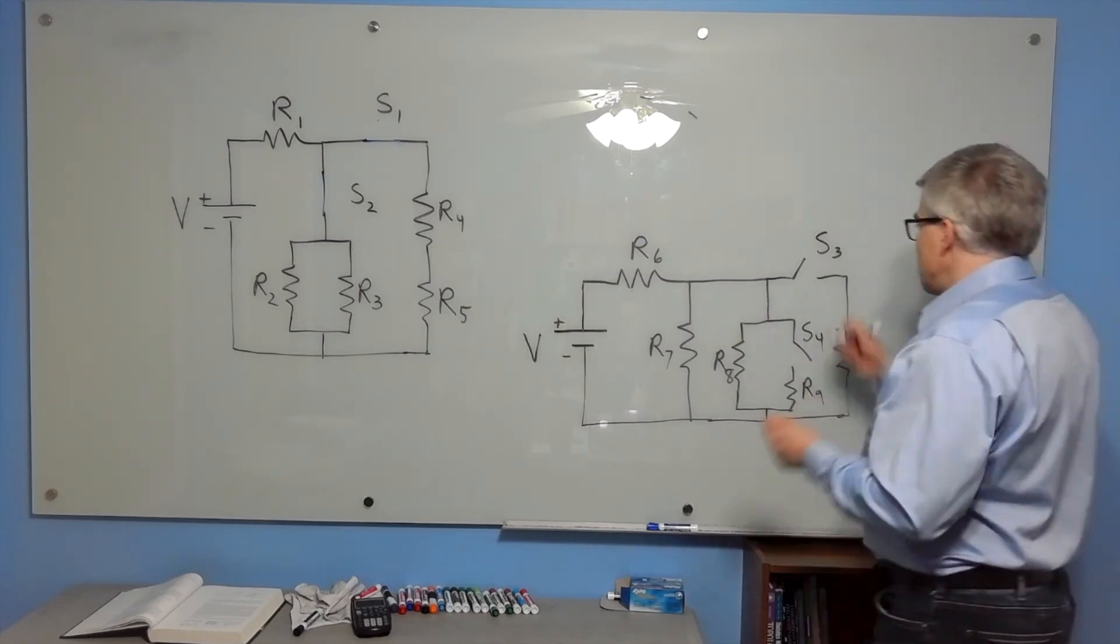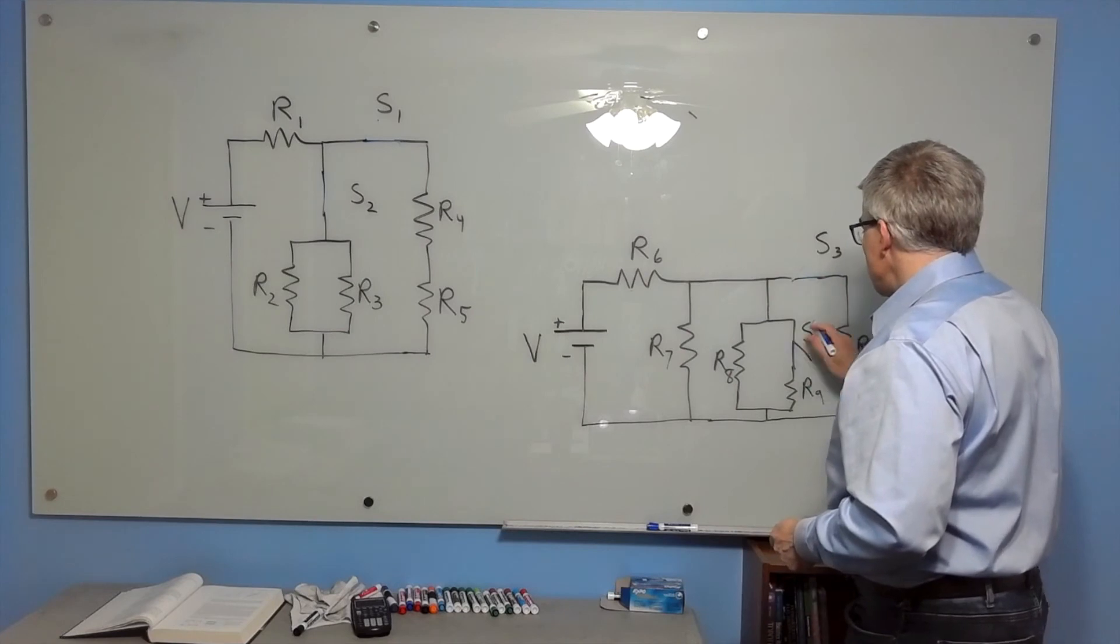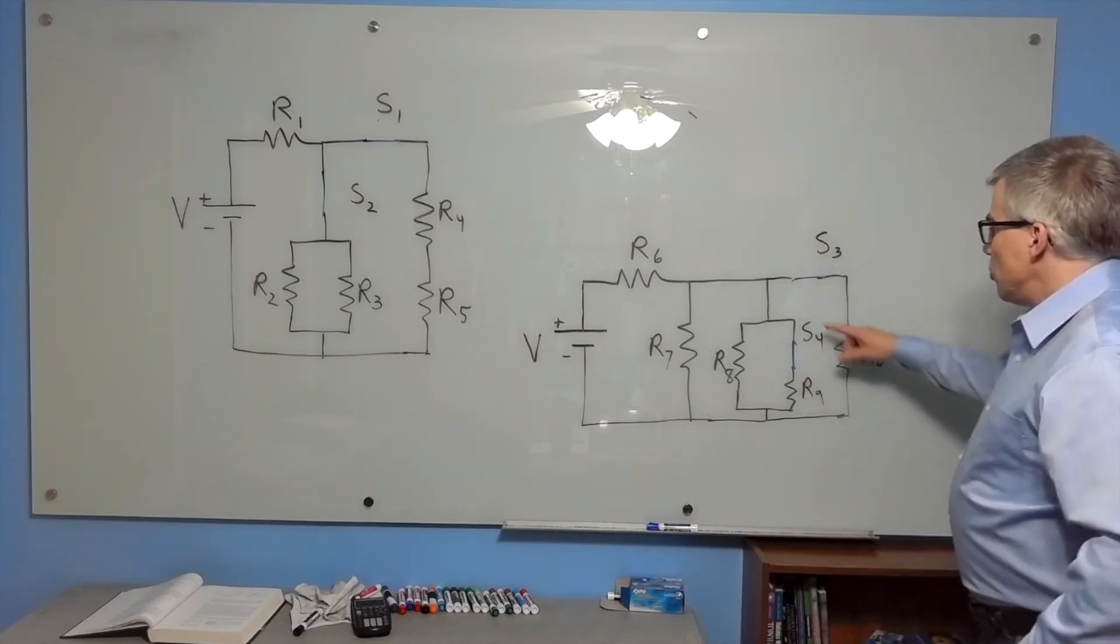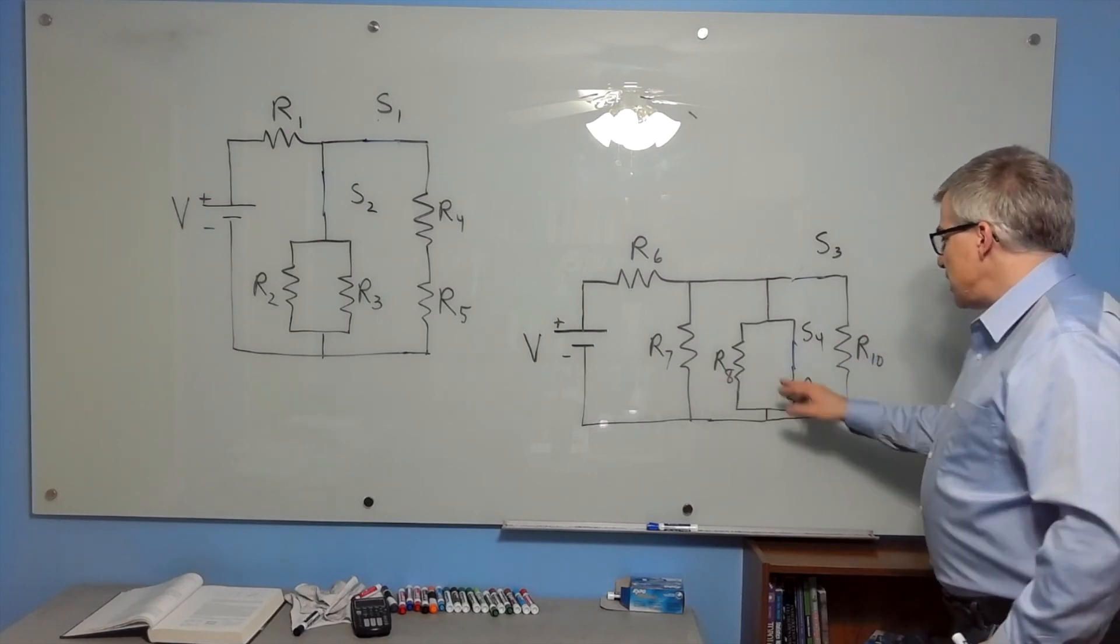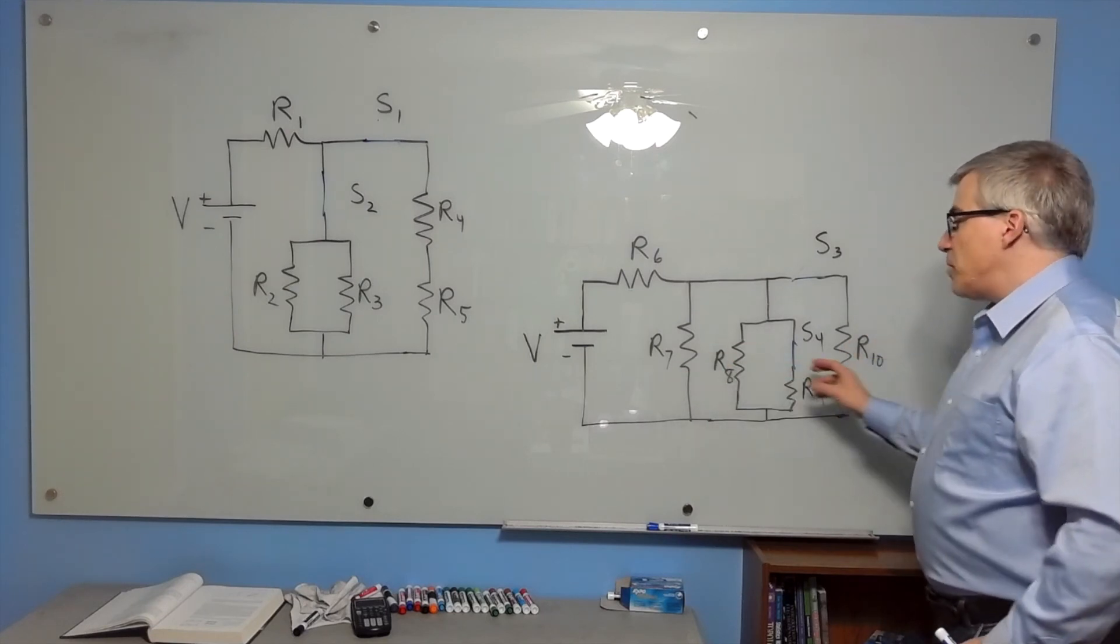Now suppose switch three is closed and we close switch four. What changes? We have essentially added yet another resistor in parallel. R7, R8, R9, and R10 are now all in parallel in that case.